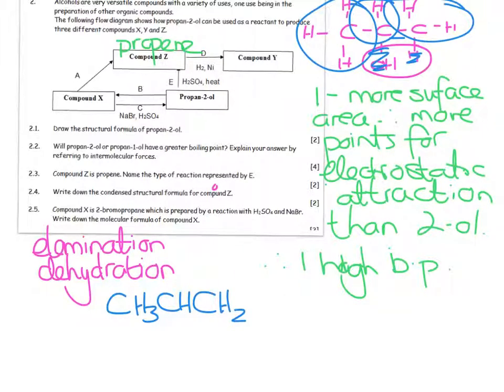Compound X is 2-bromopropane, which is prepared by a reaction of sulfuric acid and sodium bromide. Write down the molecular formula for compound X. Now we're looking for just a molecular formula. It's going to be C3, and normally it would be H8 if it was an alkane, but one of those hydrogens has actually been substituted into a bromine.